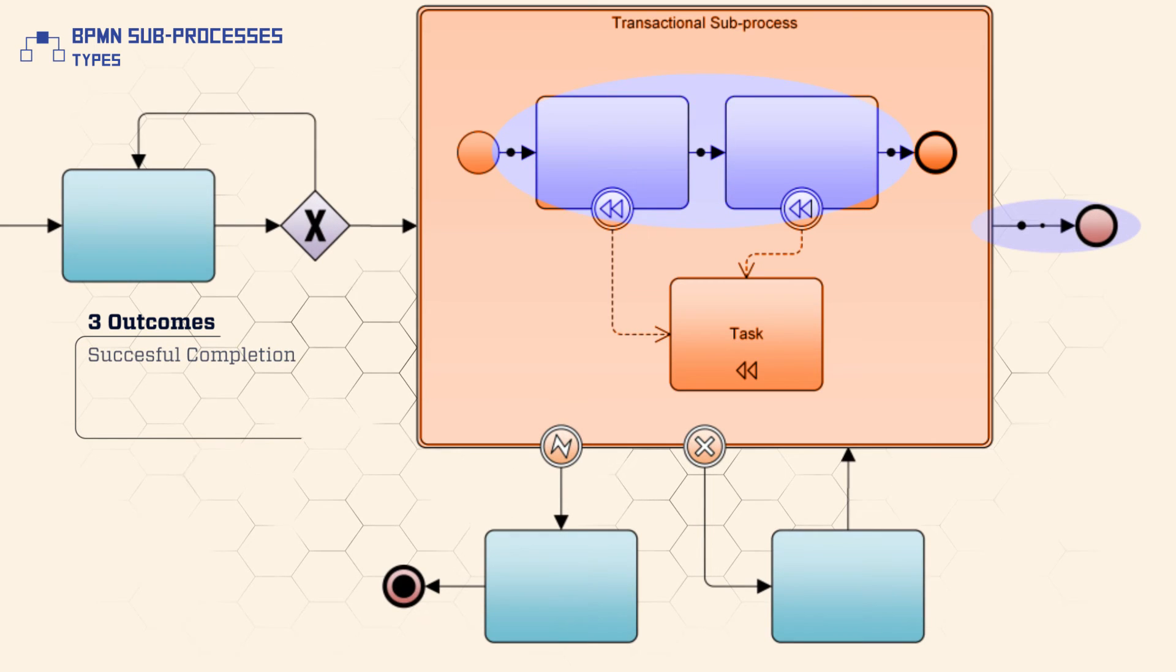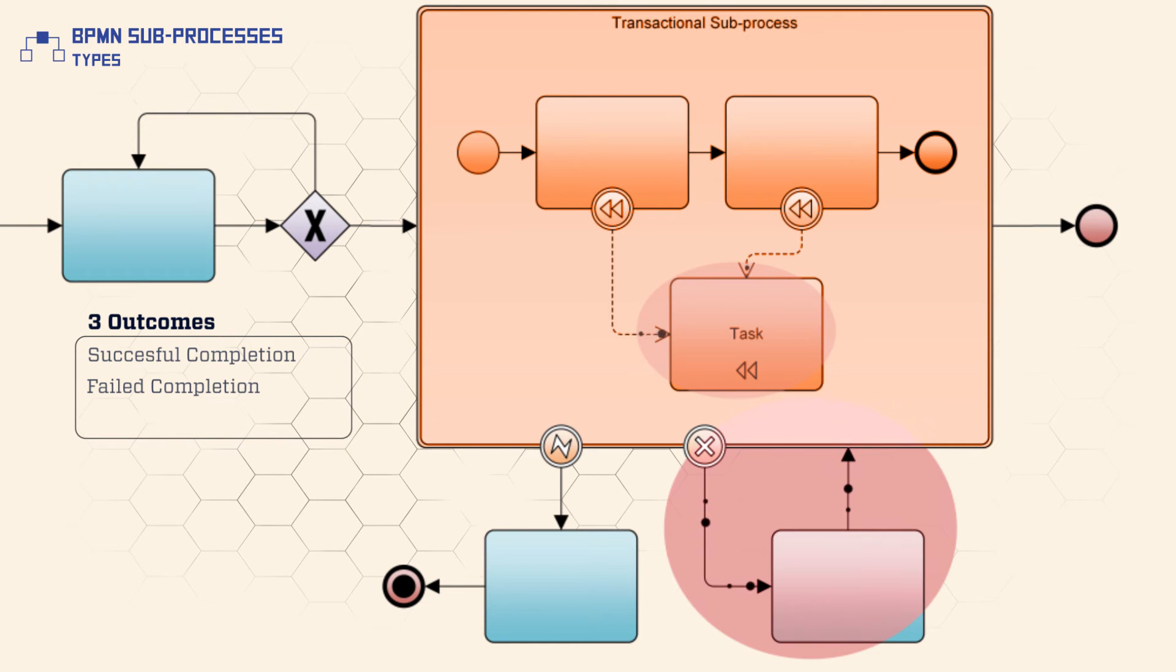Successful completion is modeled with a normal sequence flow that leaves the transaction. Failed completion is modeled with a sequence flow starting at a cancel intermediate event.